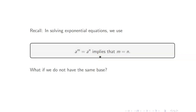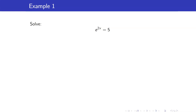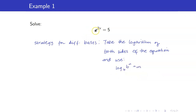But the question is: what if we do not have the same base? For example, we have e raised to 2x is equal to 5. Definitely they do not have the same base — the base here is e and the base here is 5. Our strategy for such a case is to take the logarithm of both sides. Since the base is e, we take the natural logarithm (ln) of both sides.